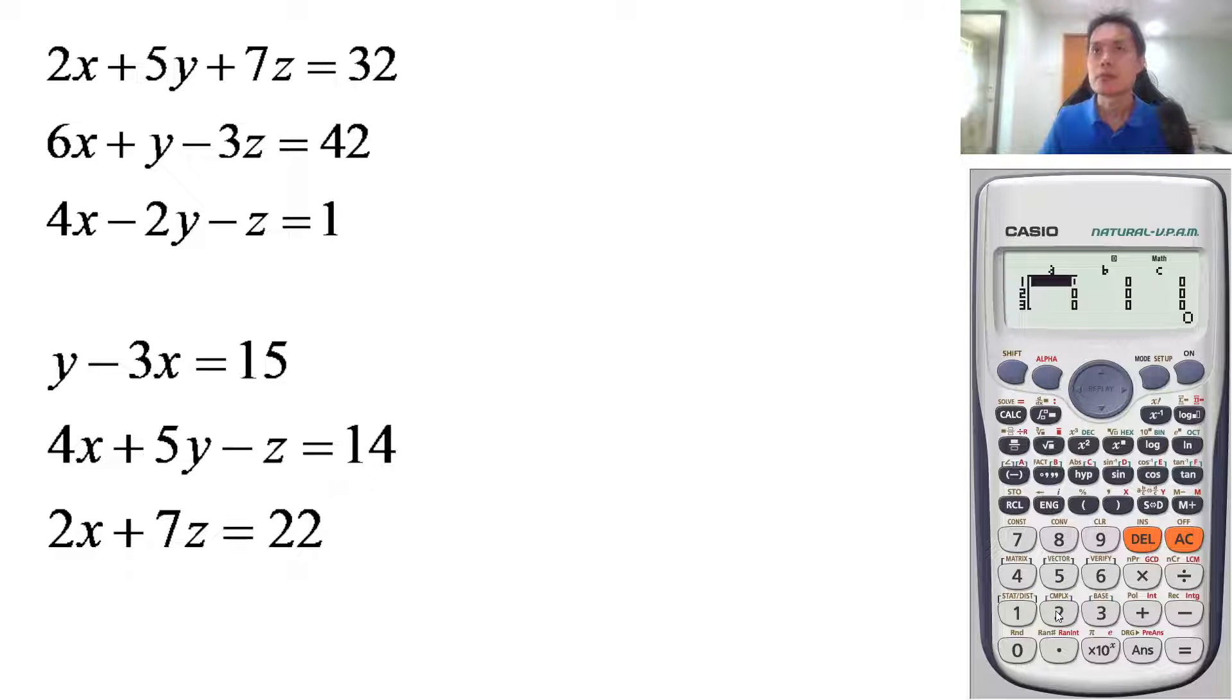Now the next thing is you notice you have a, b, and c. So the first term here, your a will be 2. Your b, then you press equals. Your b will be 5, you press equals. Your c is 7, you press equals, and your d is 32. Press 32 and equals.